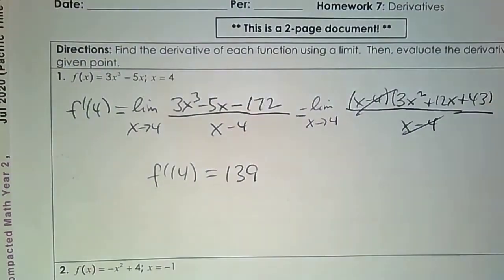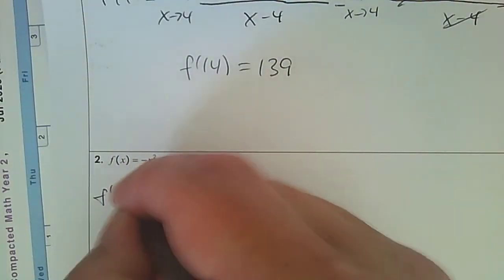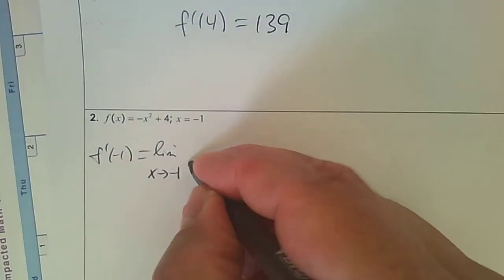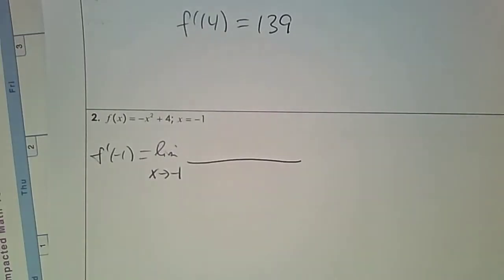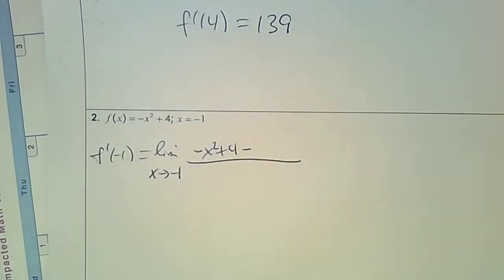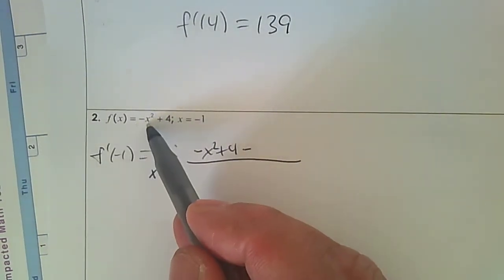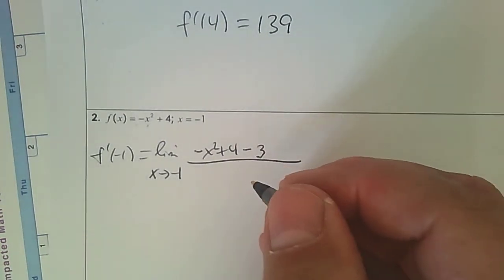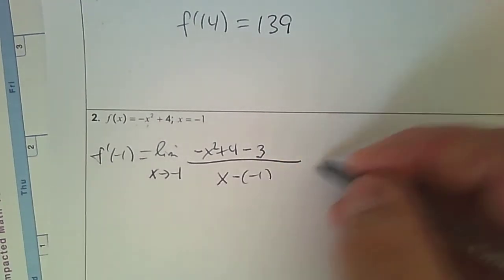The next one's going to be simpler. Number 2: can you find the derivative at negative 1? That's the limit as x approaches negative 1. So that's f(x) subtract — then I'm going to plug in negative 1. So when I plug negative 1 in, I get 1, and it's negative 1 after that plus 4, so the answer is 3. So I'm subtracting 3.